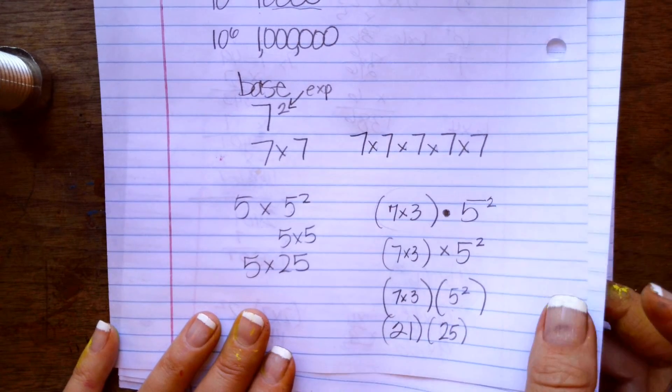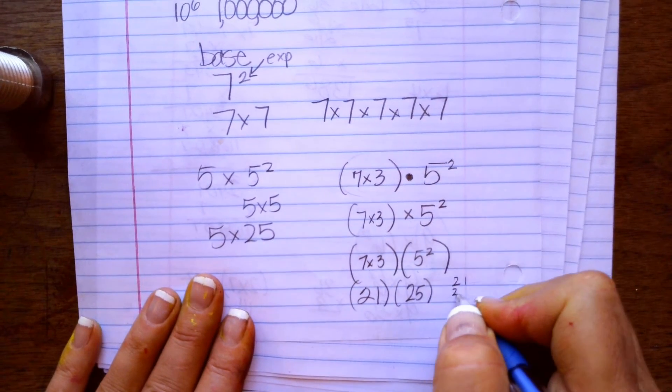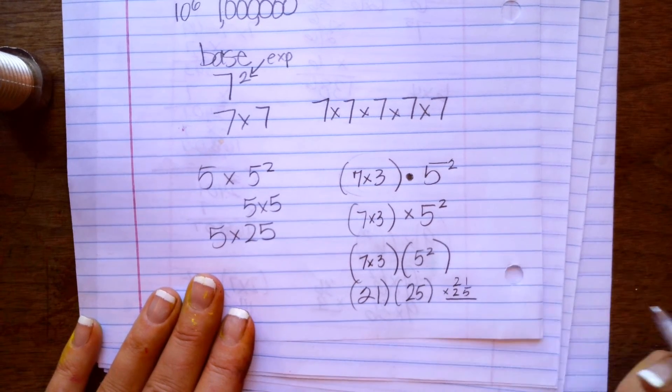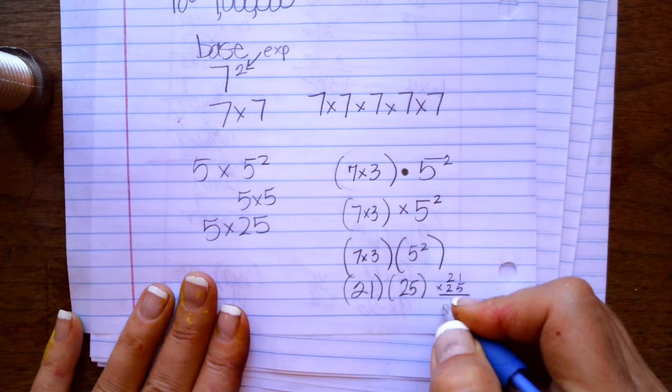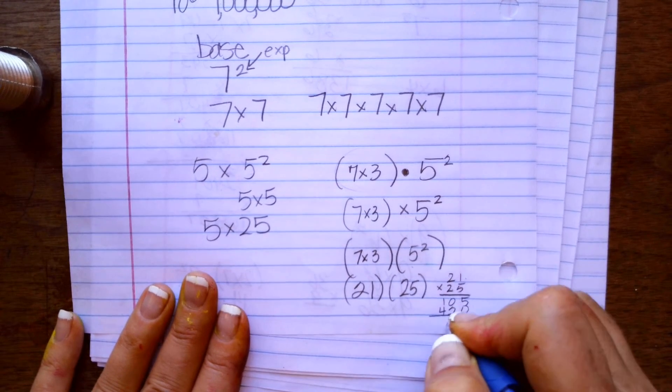So now we have 21 times 25, and on the side of your paper, you would do the math like that. And then you would get 525.